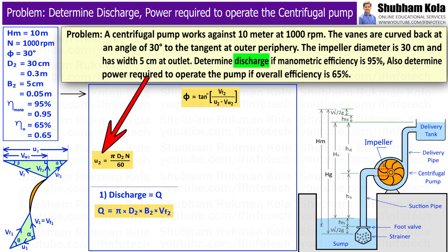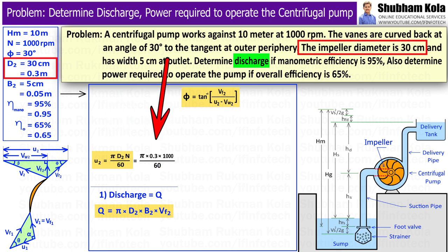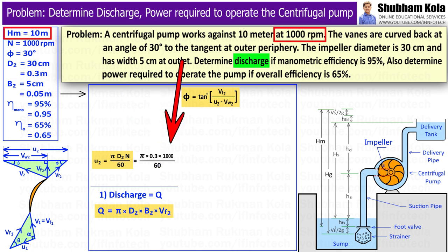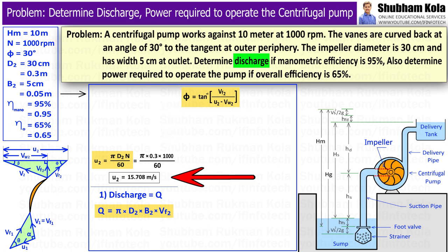And U2 we can calculate from the formula: velocity of vane at outlet U2 equal to Pi D2 n by 60, where D2 is 0.3m and N is 1000rpm. We will calculate U2 as 15.708m per second. From here we will get U2, velocity of vane at outlet.